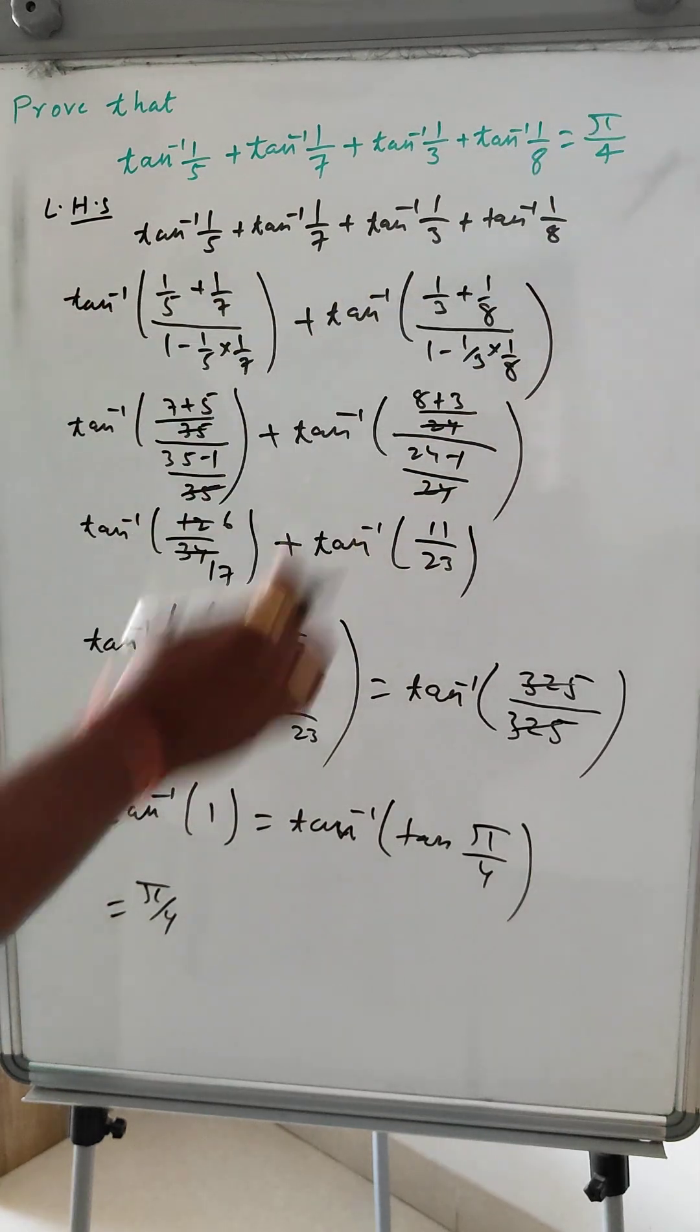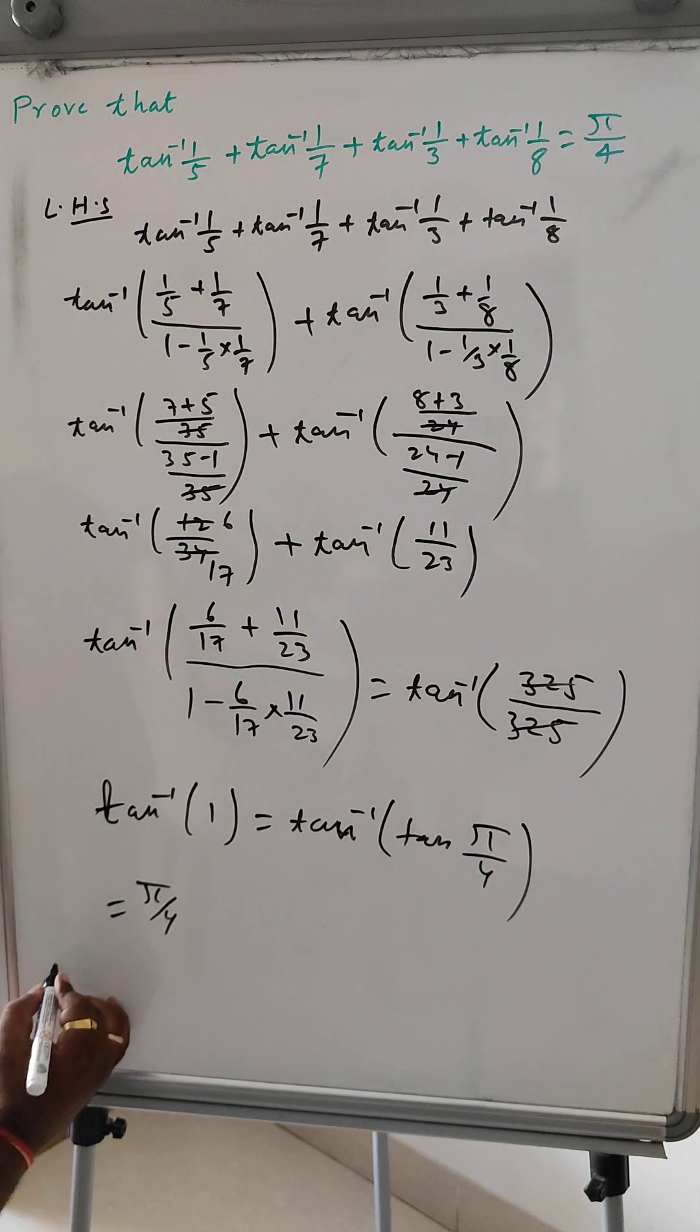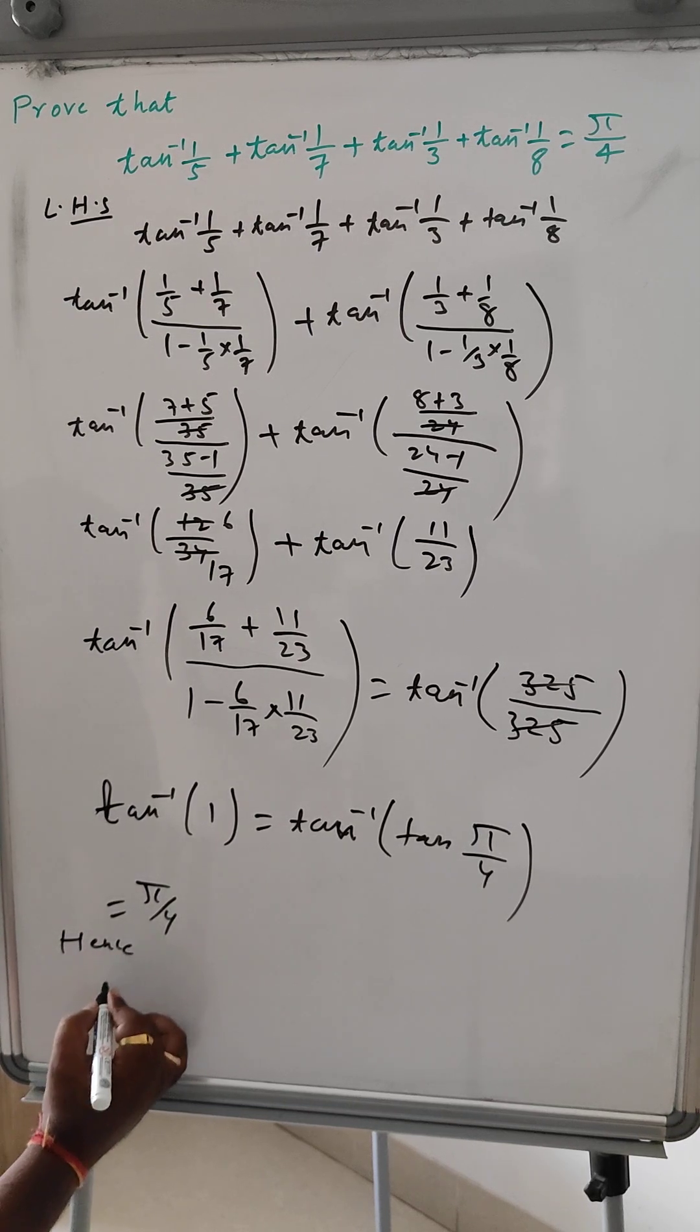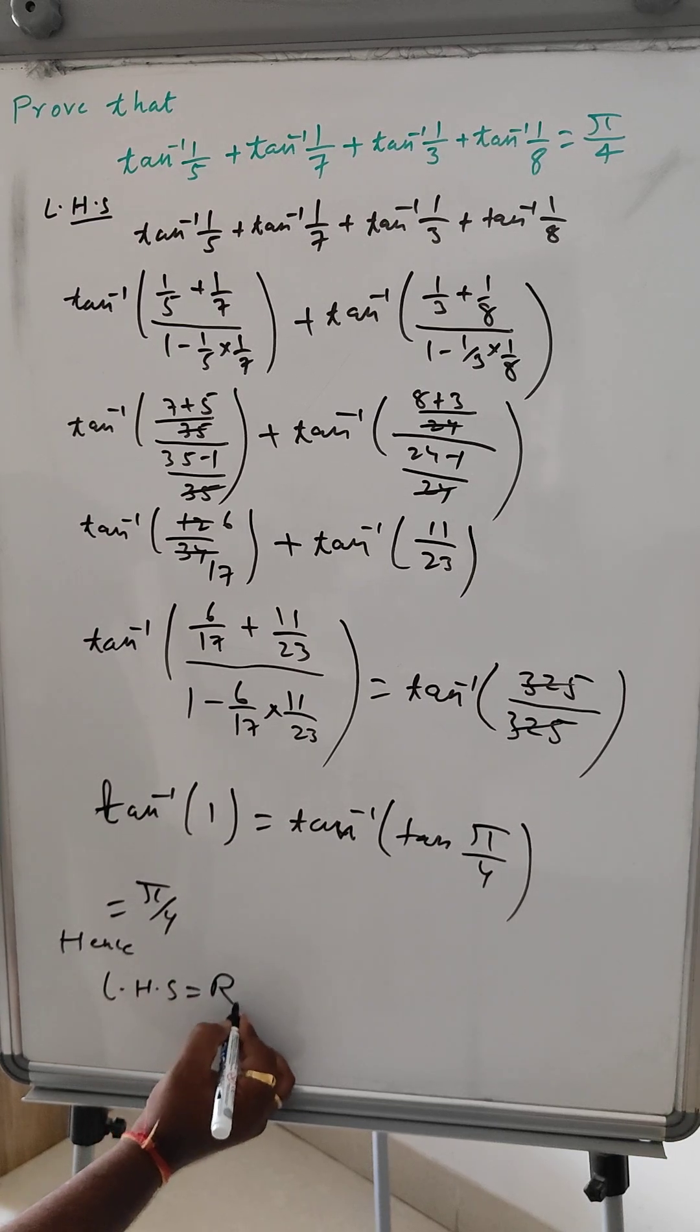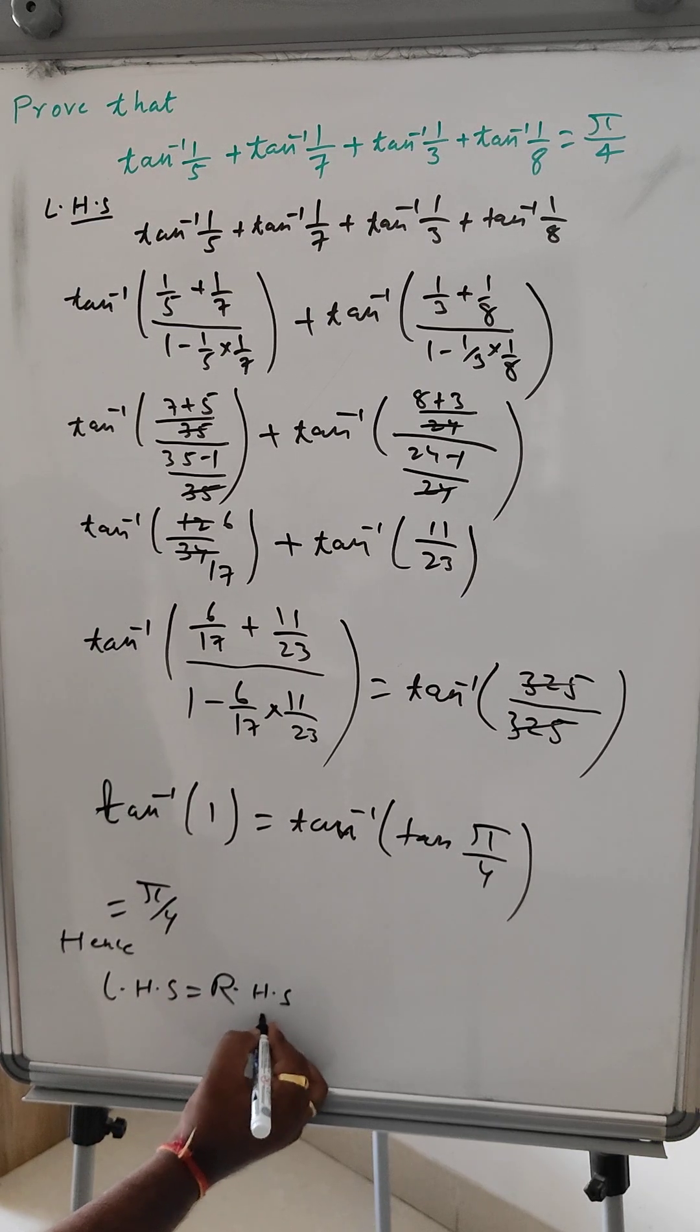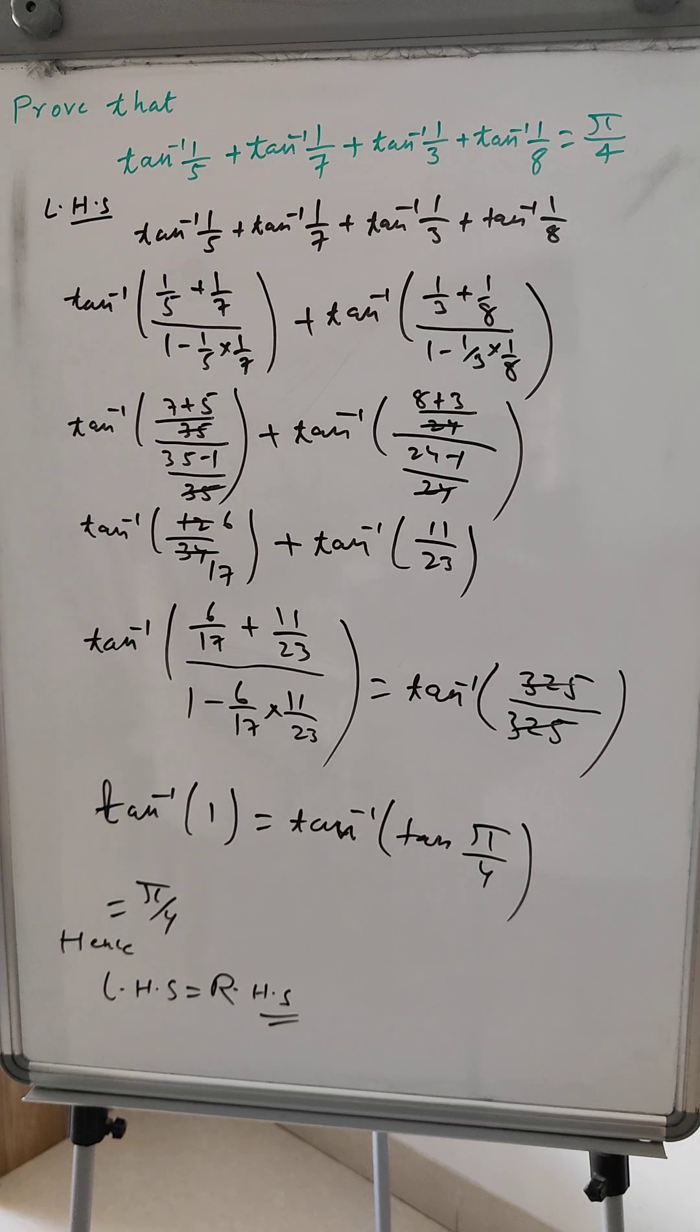So pi by 4, we can write hence LHS is equal to RHS. Thank you, thank you for watching, please like and subscribe.